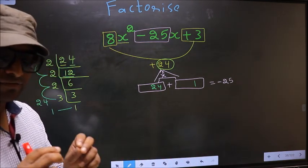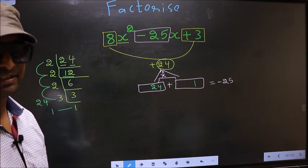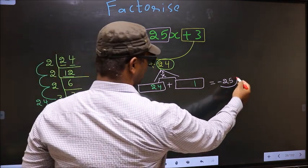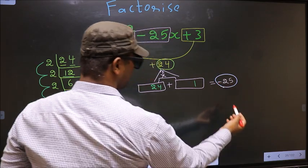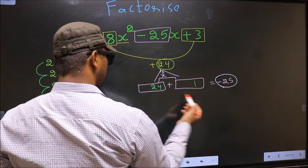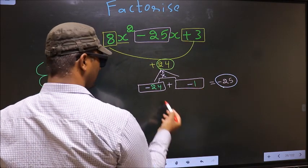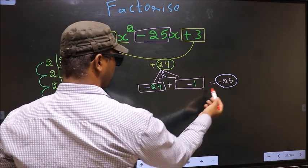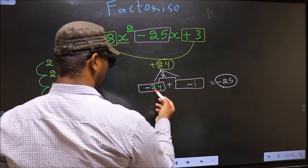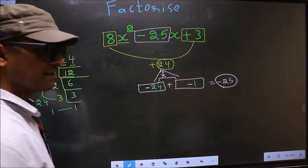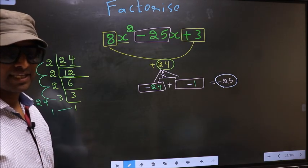Next, now we should adjust the signs. What I mean is, over here we should get minus 25. To get minus 25, we should place negative here and also here. Minus 24 minus 1 is minus 25. Minus 24 into minus 1 is plus 24. So we have adjusted the signs.